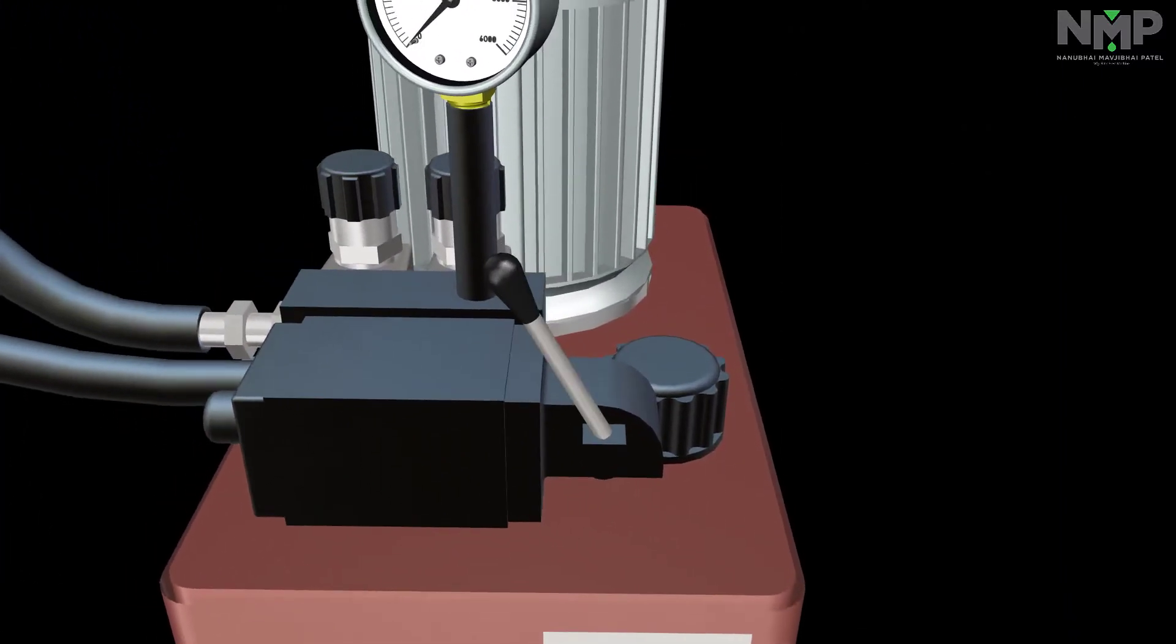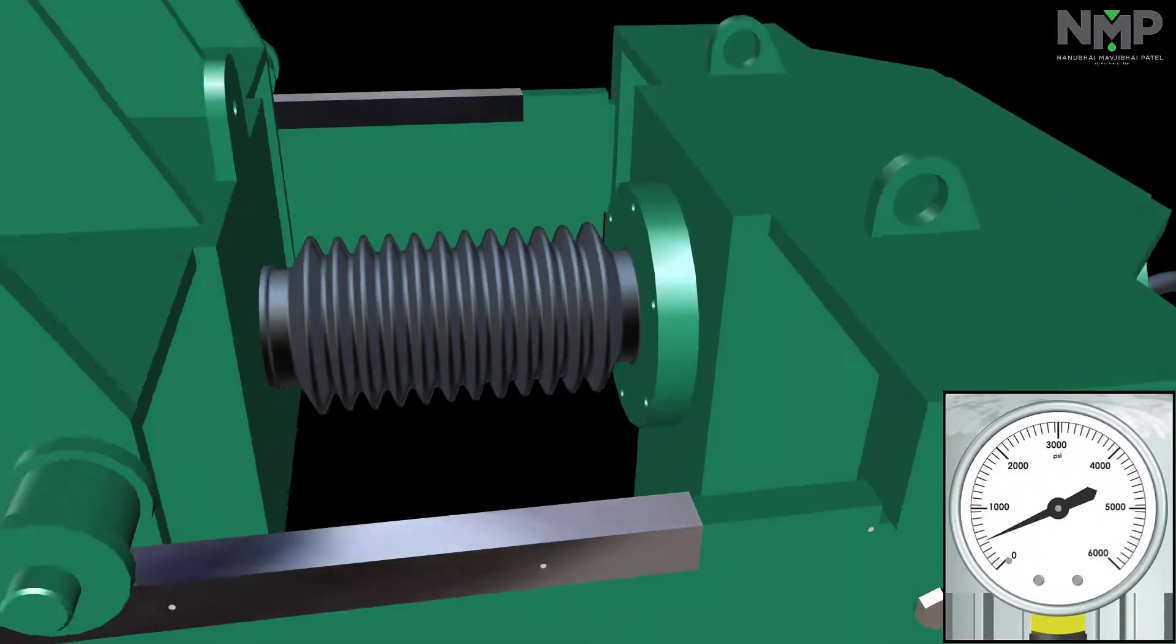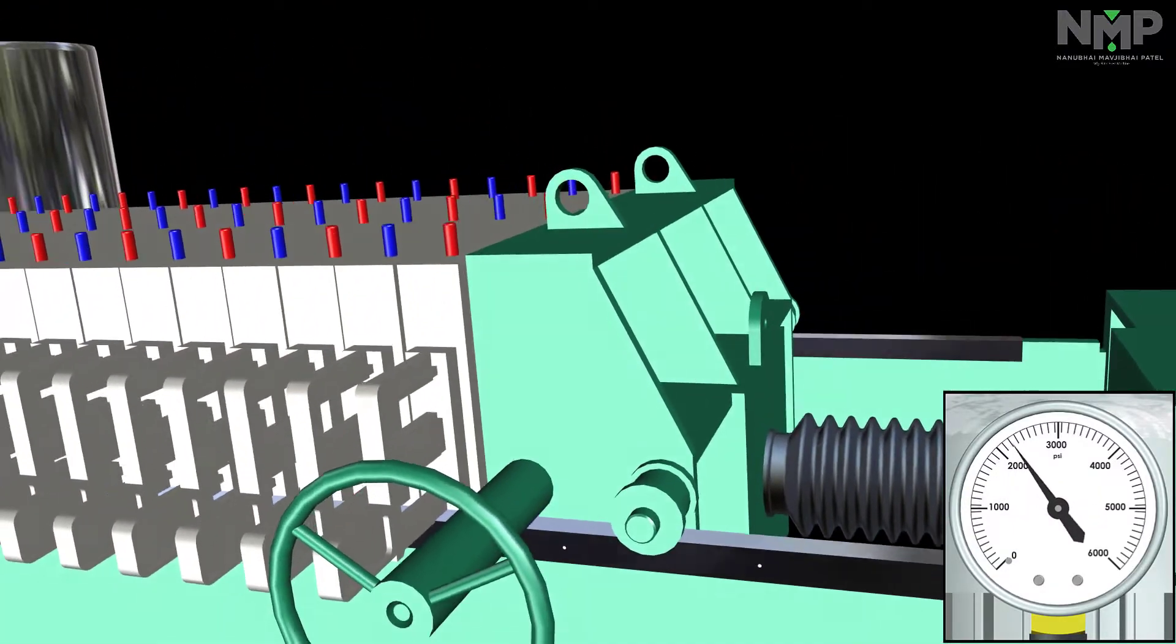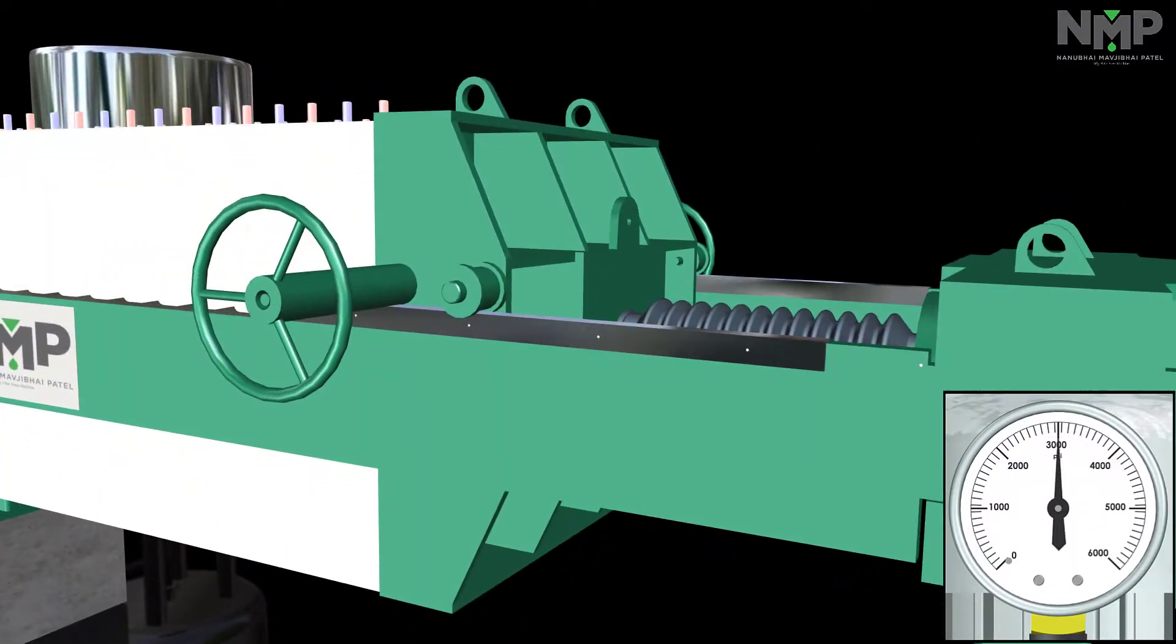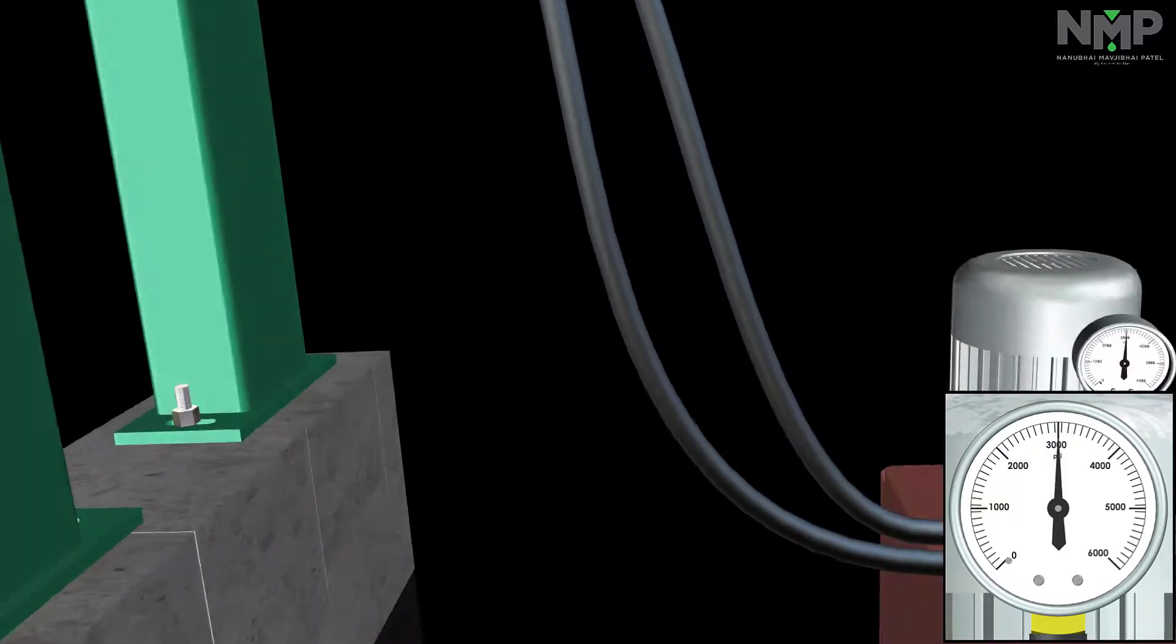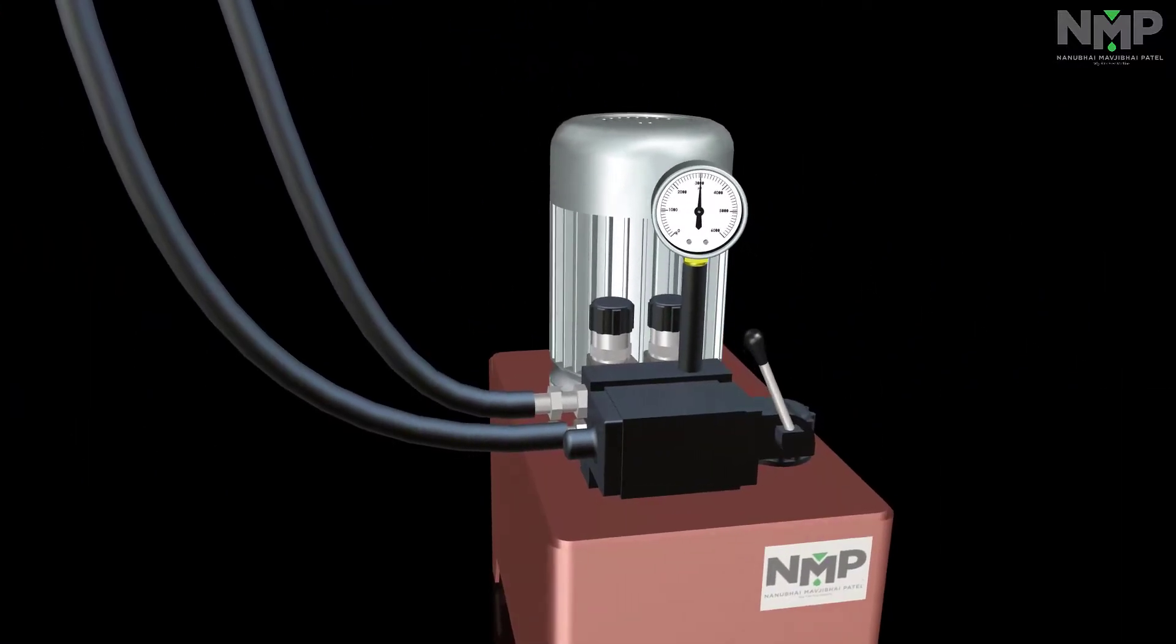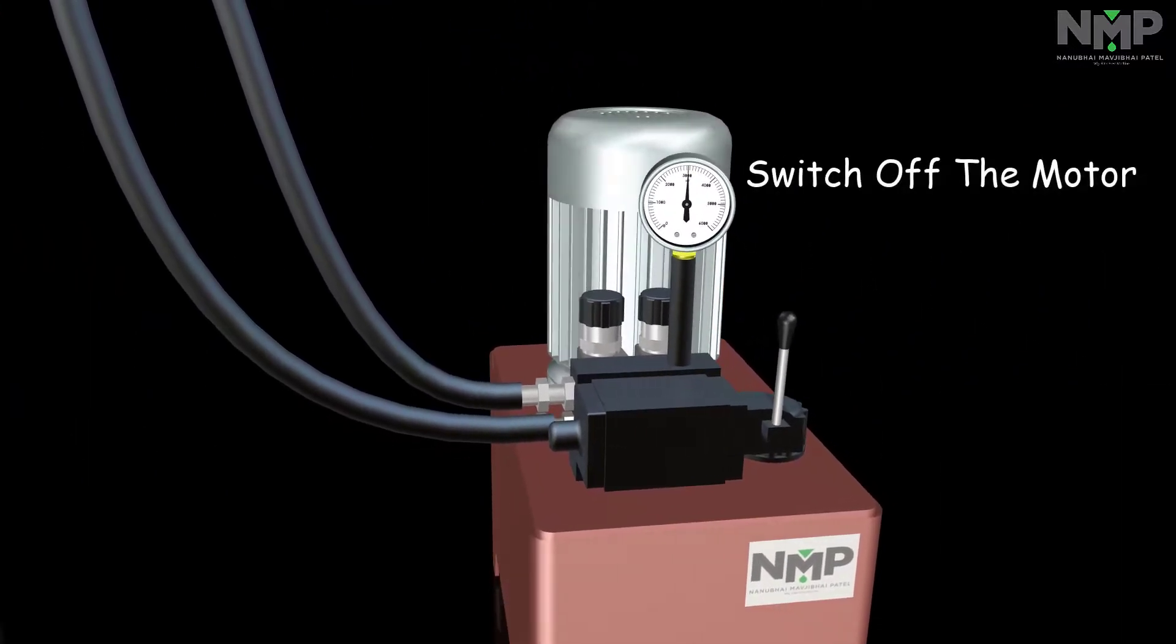Now pull the lever of direction control valve in forward direction. The cylinder will now start moving forward, pressing the moving head against the plate. When pressure is 3000 PSI on pressure gauge, switch off the motor.